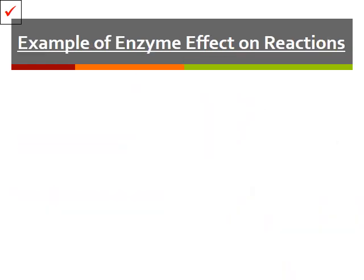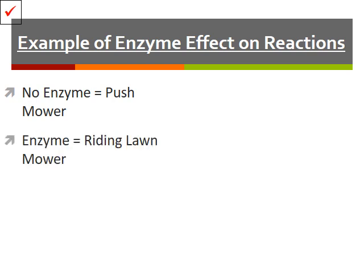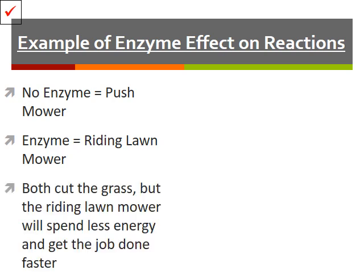Here's an example of enzymes and their effect on reactions. Imagine you need to cut a large lawn. Having no enzyme would be like cutting it with nothing more than a push mower — you can do it, but you'll spend a lot of time and energy going back and forth. An enzyme would be like using a riding lawn mower — you spend a lot less energy and get the lawn cut much more quickly. Both will get the job done, but the enzyme helps it get done more quickly.